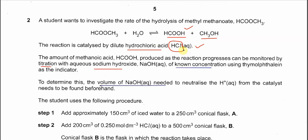The first step we need to do is to get the volume of sodium hydroxide needed to neutralize the acid from the catalyst. We get this volume of NaOH used, and after that we subtract it.